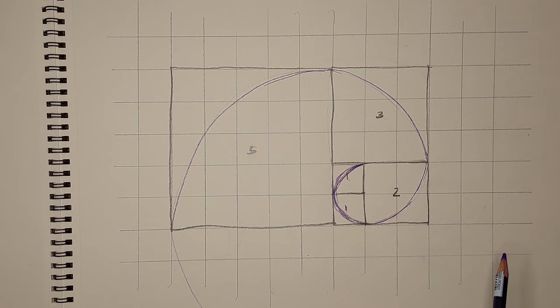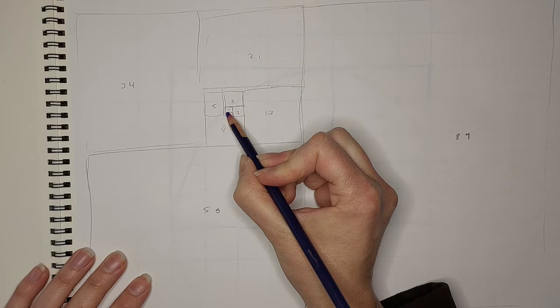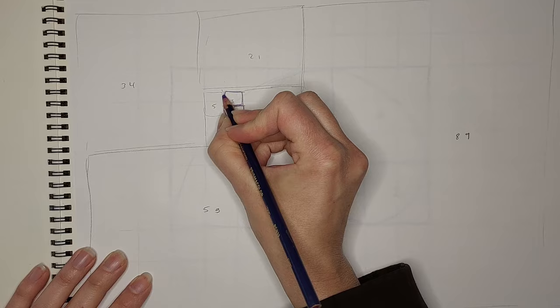So if we were to get a bigger one of these you can see that it goes, I don't know if you actually can see this, so it's one and one, two, three, five, eight, 13.